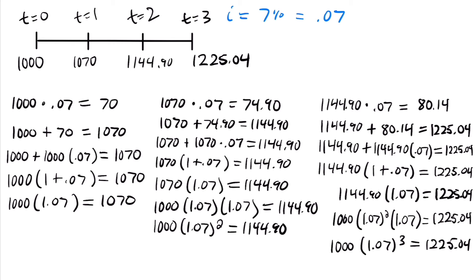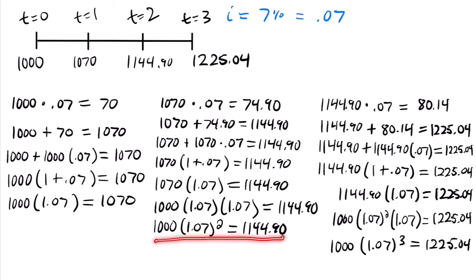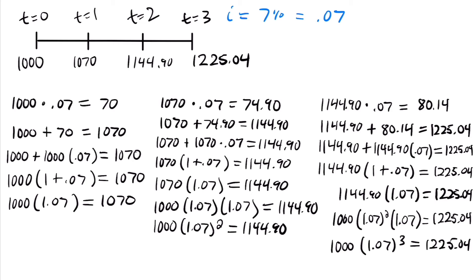So why did we do all that? Look at the pattern: in year one, we had $1,000 times (1 + interest rate) to the first power. In year two, $1,000 times (1 + interest rate) squared. In year three, $1,000 times (1 + interest rate) cubed. It seems like all we have to do to find the amount at the end of any year is multiply our starting amount times (1 + interest rate) to the power of how many years we want to go into the future.